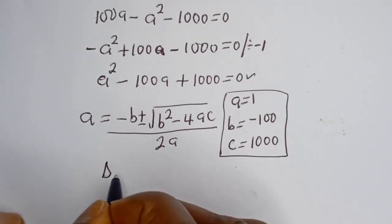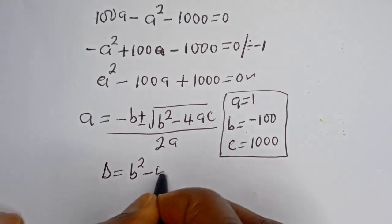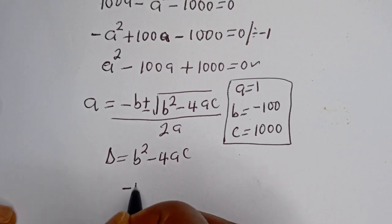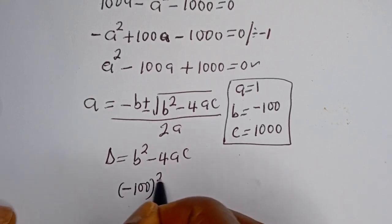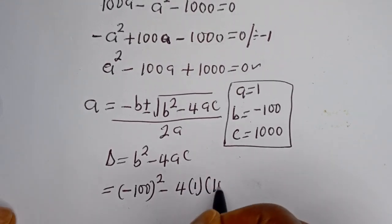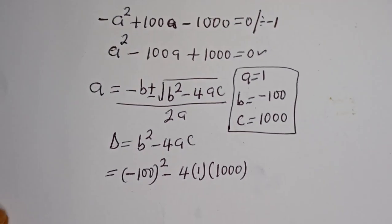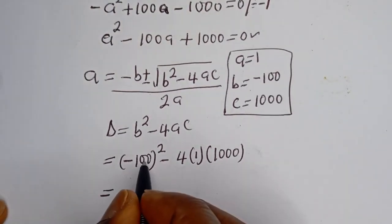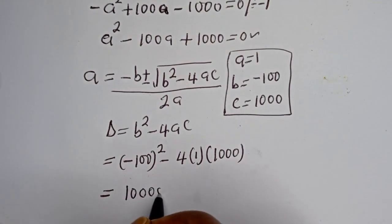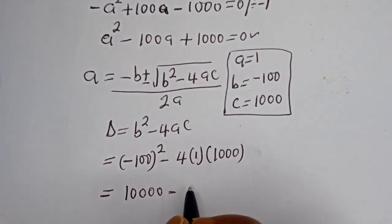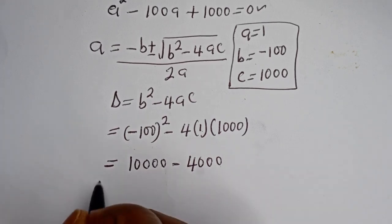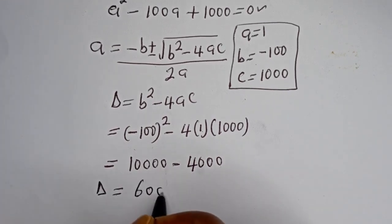From here we have the discriminant D is equal to b squared minus 4ac. With b equal to minus 100, we have minus 100 squared, minus 4 multiplied by 1 multiplied by 1,000. That is 10,000 minus 4,000. So D is equal to 6,000.